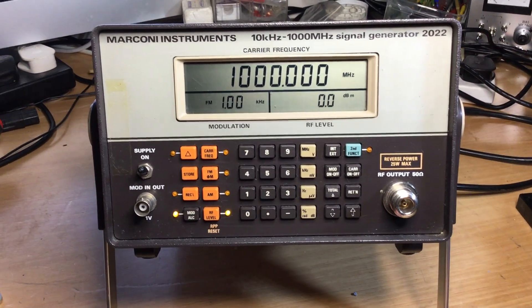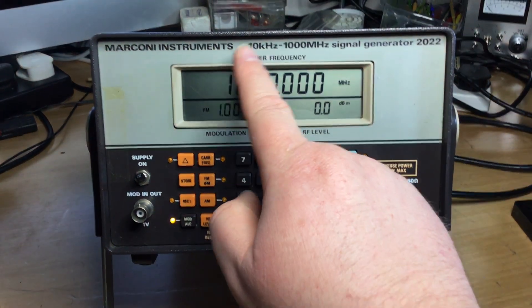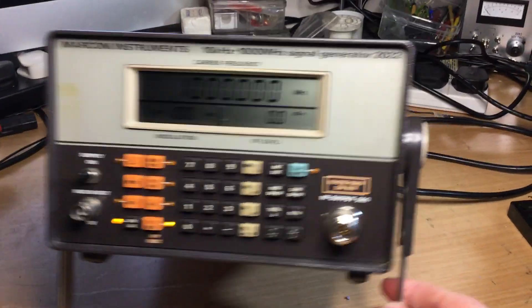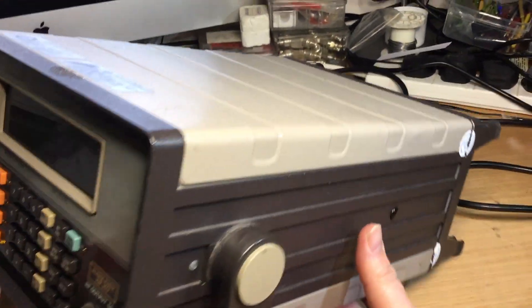The signal generator goes from 10 kilohertz to 1000 megahertz, 1 gigahertz. It's a nice little small package, you know, it's quite nice to fit on the bench.